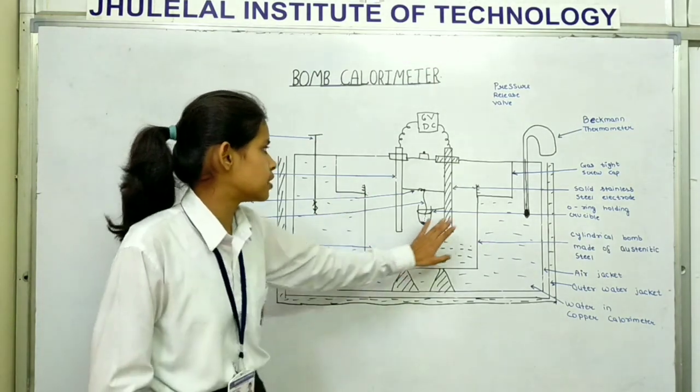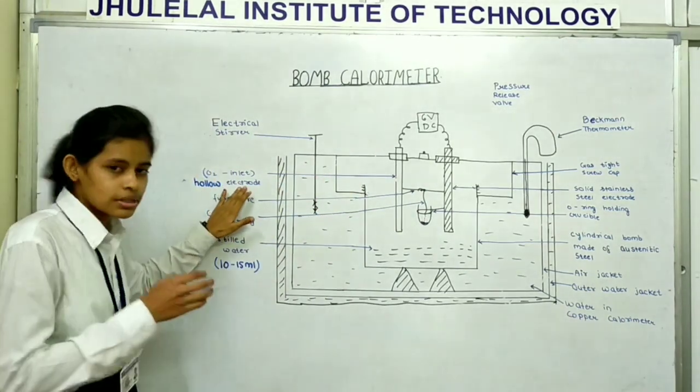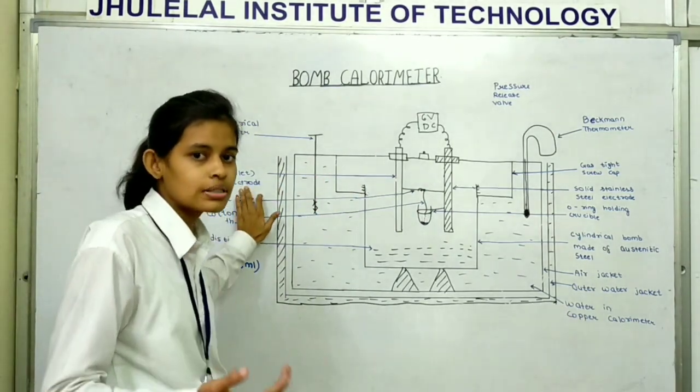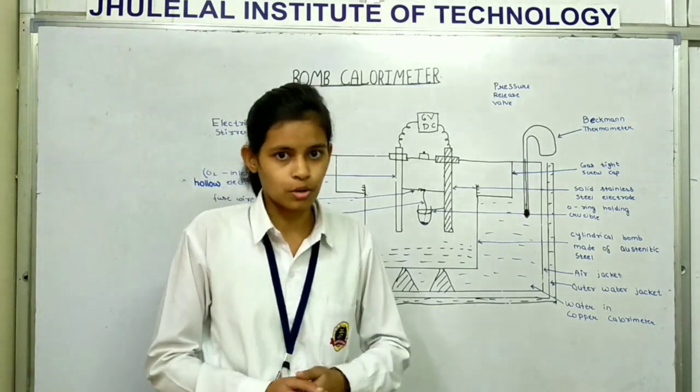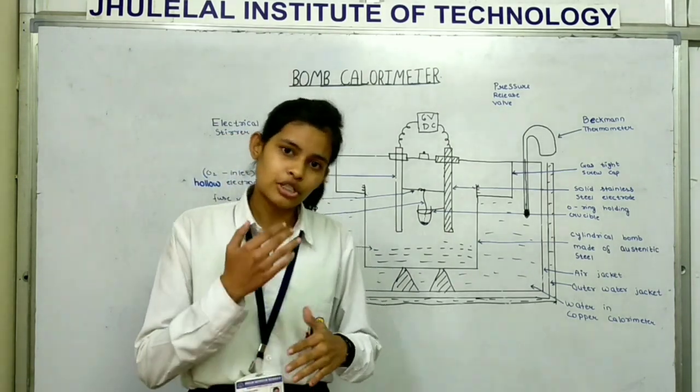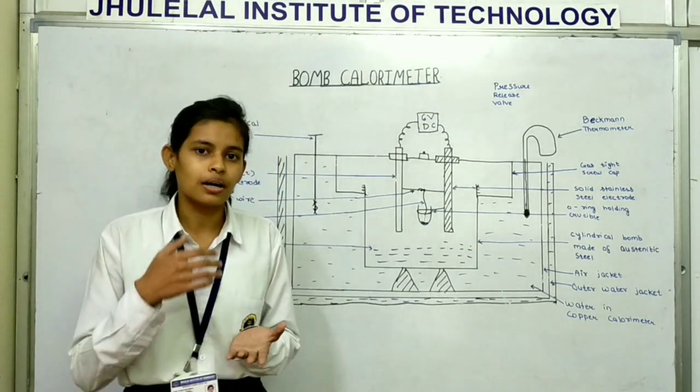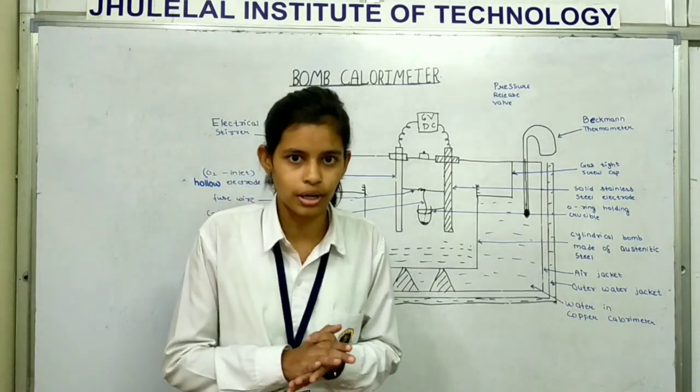Bomb is filled with the oxygen due to hollow electrode which allows the oxygen inlet up to pressure of 25 atmospheres. The bomb is put in copper calorimeter which contains water, stirrer and thermometer, and calorimeter is placed properly.